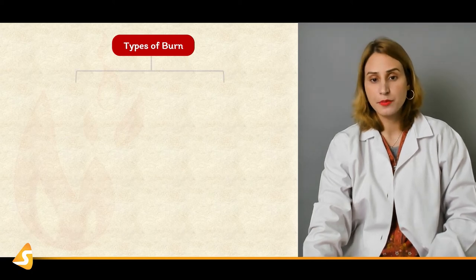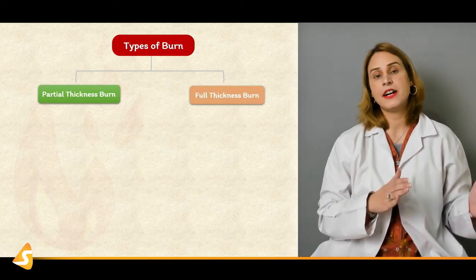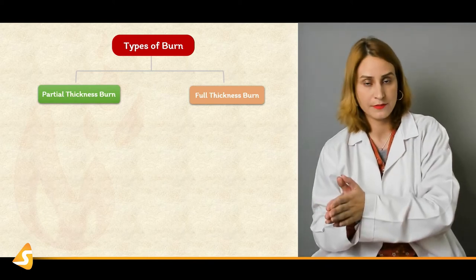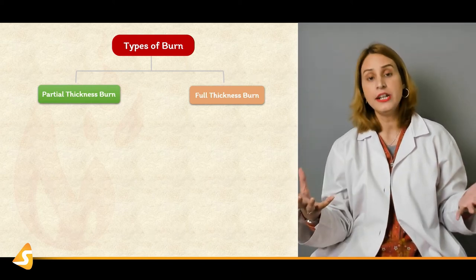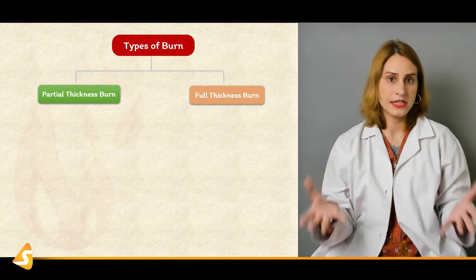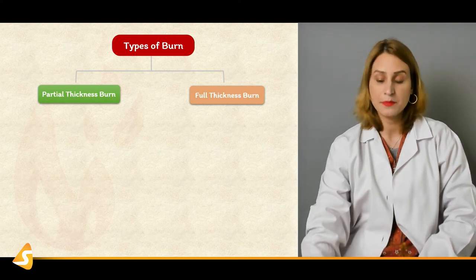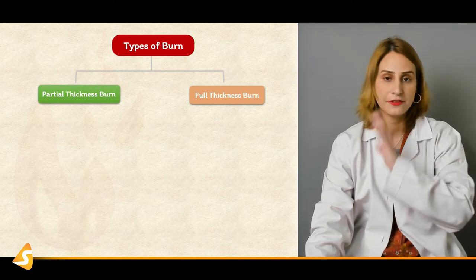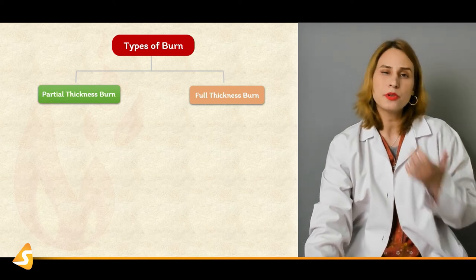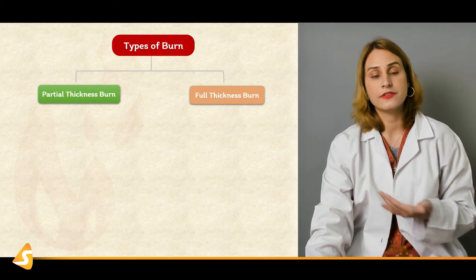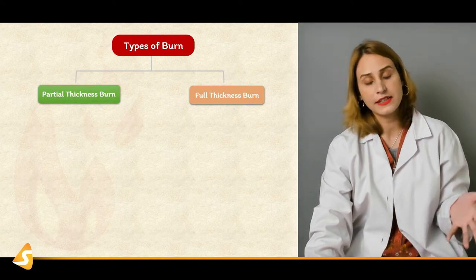Now if we talk about the types of burns, we broadly classify these into superficial and deep burns, and then classify into partial thickness burn or a full thickness burn. There are many ways to classify burns — one is entirely depending upon the thickness, another depending upon the depth of the burn, or depending upon the site. But most commonly we classify on the basis of depth: superficial thickness and deep thickness, which is also called partial thickness burn or a full thickness burn.